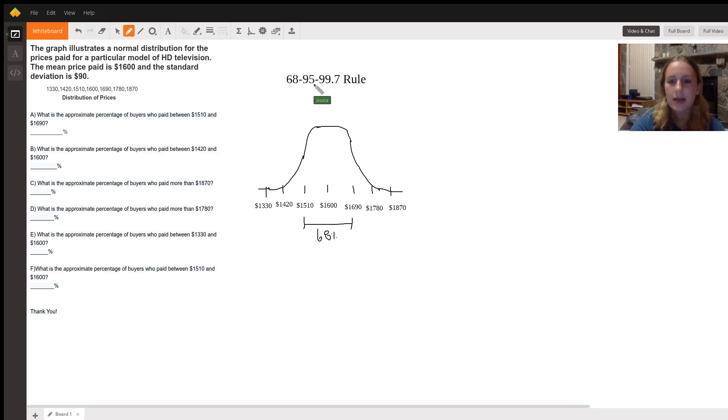I'm writing this in for you guys. Again, so then 95% of the data values are within two standard deviations, so between $1,420 and $1,780 in this problem.